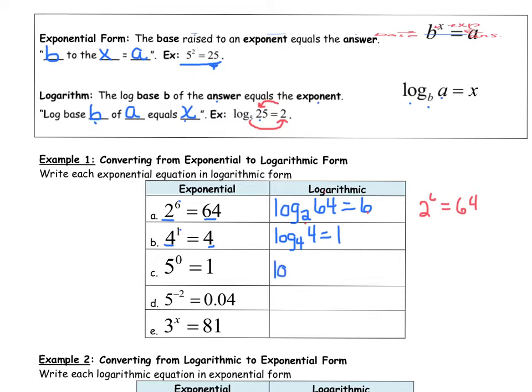Another time, log base 5, because the base is 5, of the answer, which is 1, equals the exponent, which is 0. In other words, 5 to the 0 equals 1.